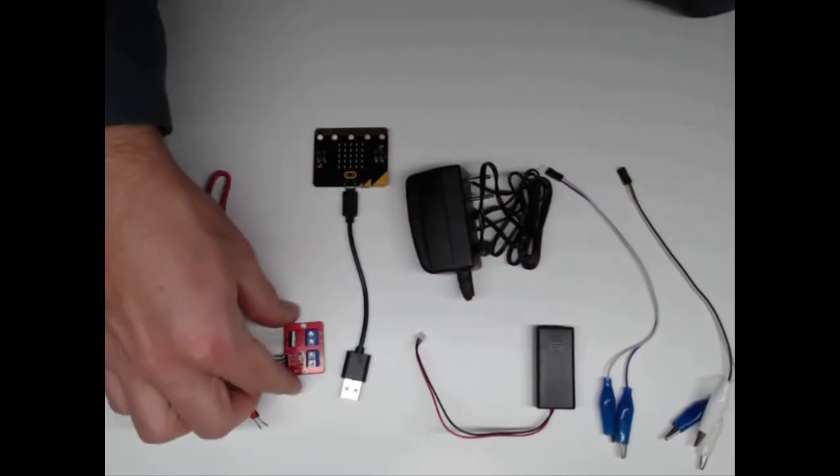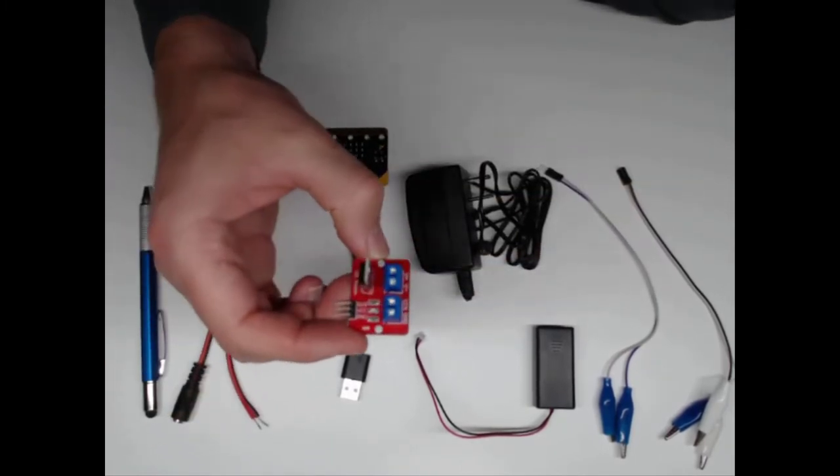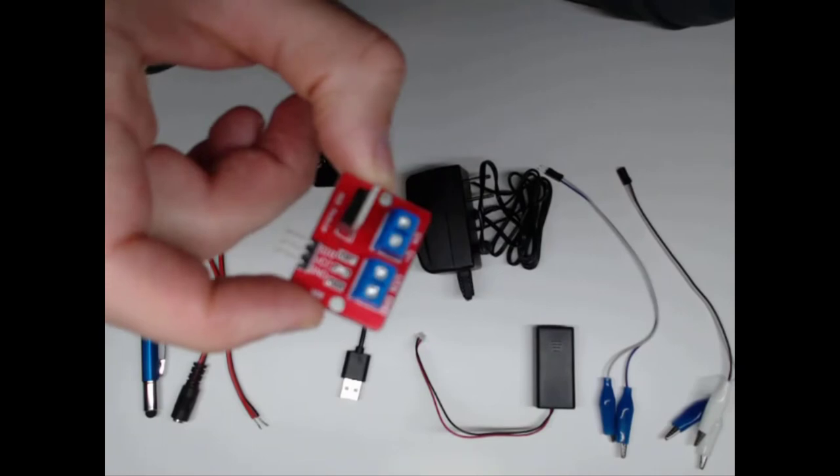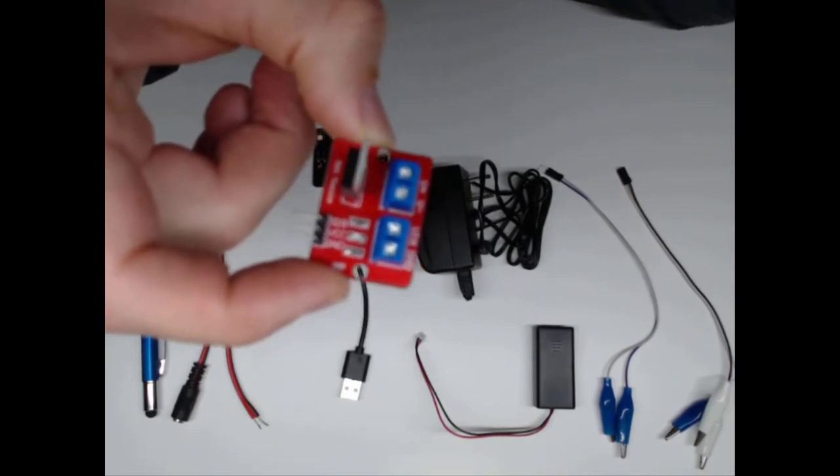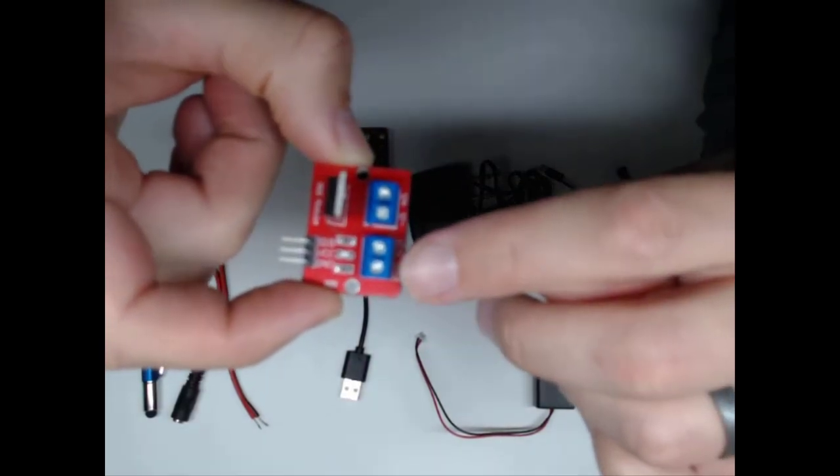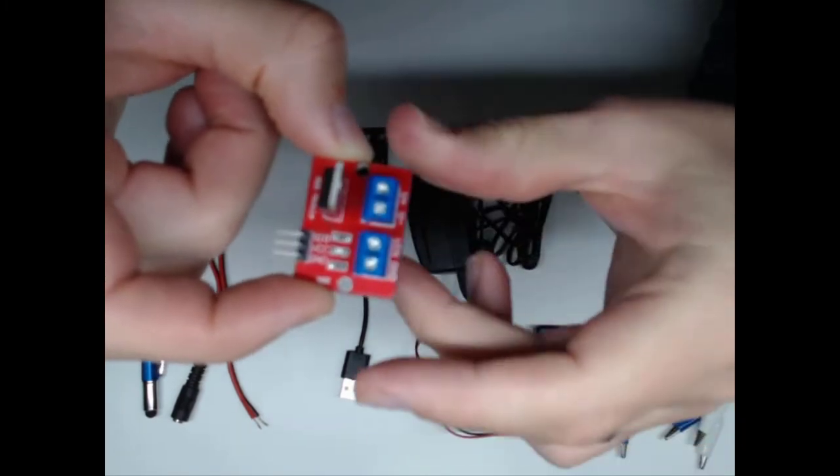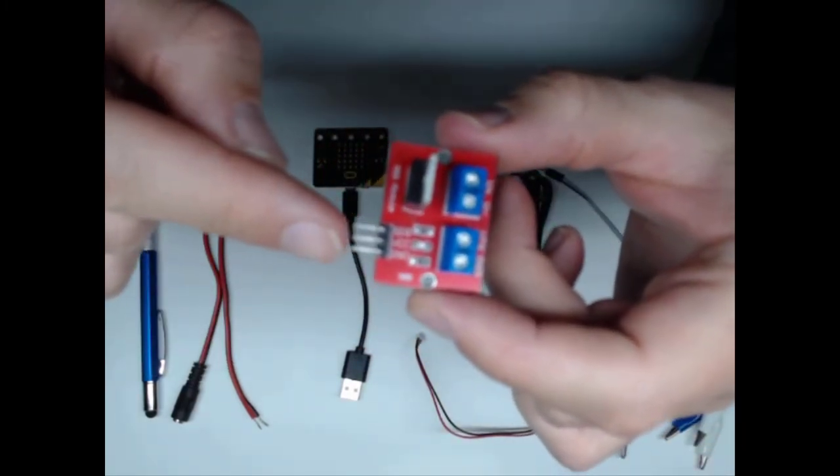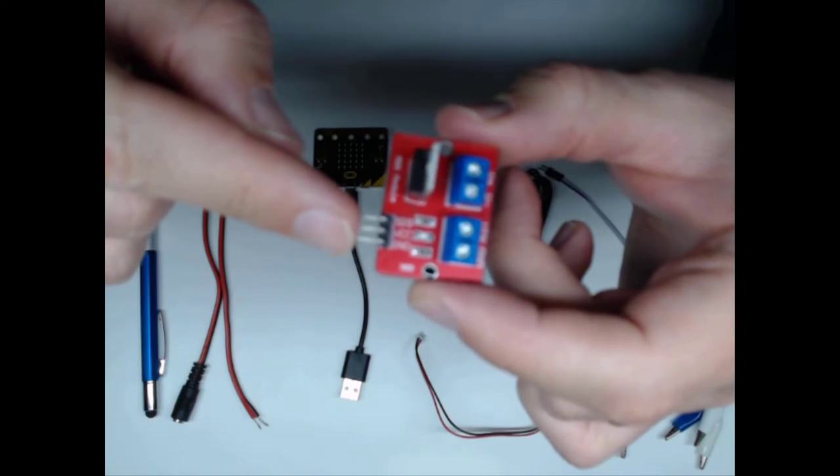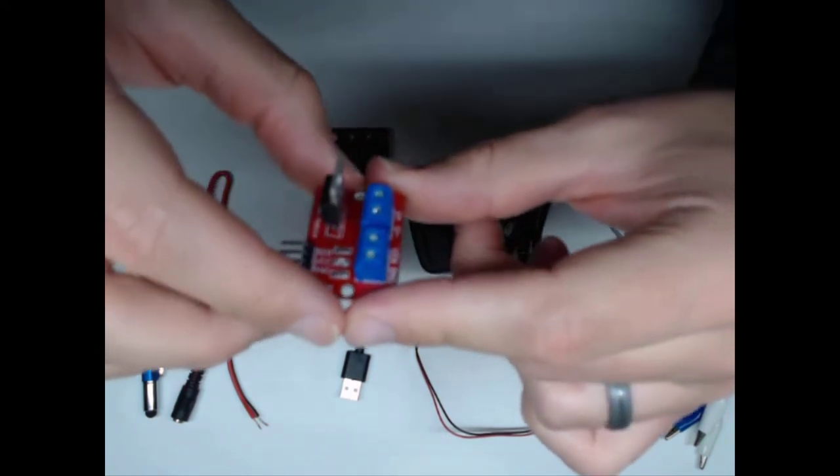Then the next thing we have is our MOS module. This is basically just an electronic switch. We're going to connect something to here and something to here and then we're going to control this with an electronic signal sent from the microbit here. I'll show you how to hook that up in a little bit.